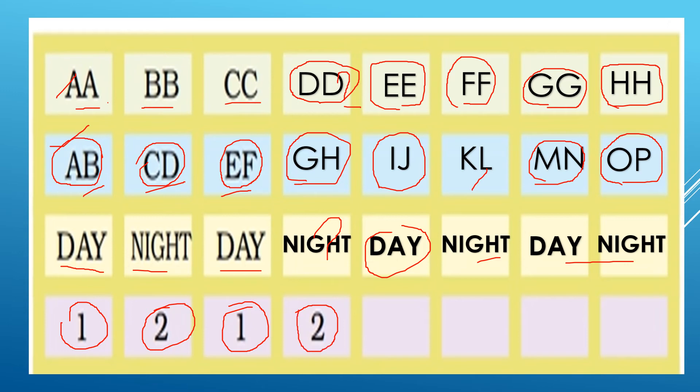So what we have to write here in these boxes. We have to write one, two and one, two in this way.